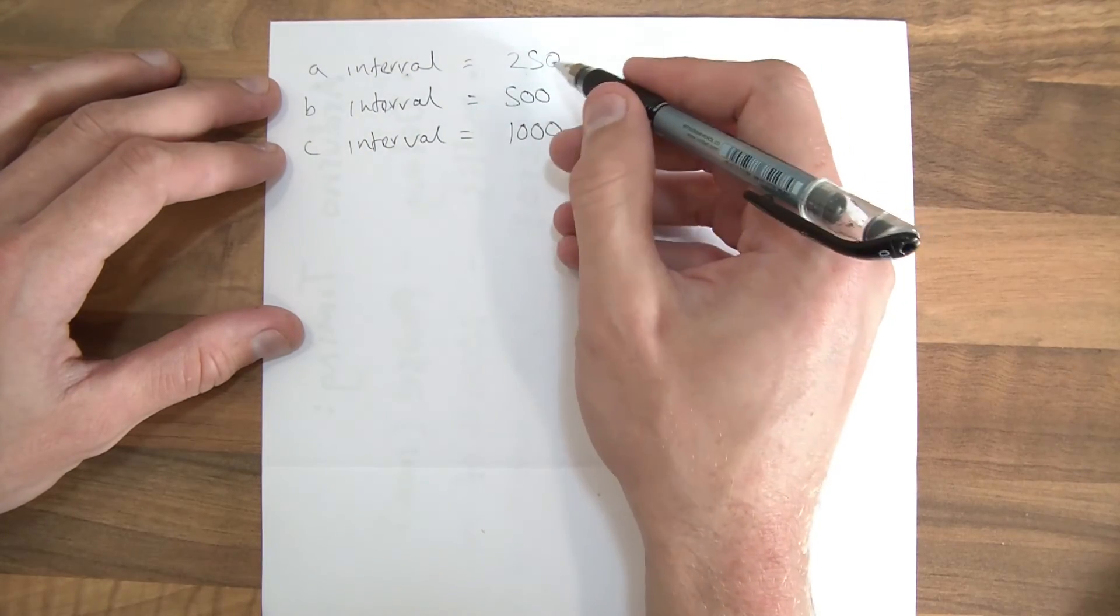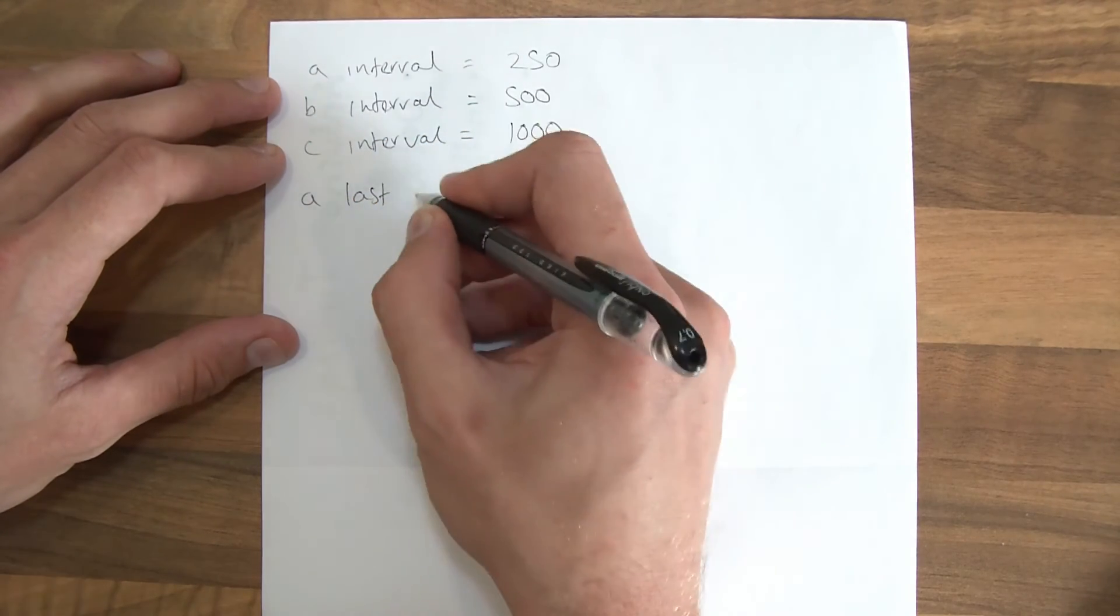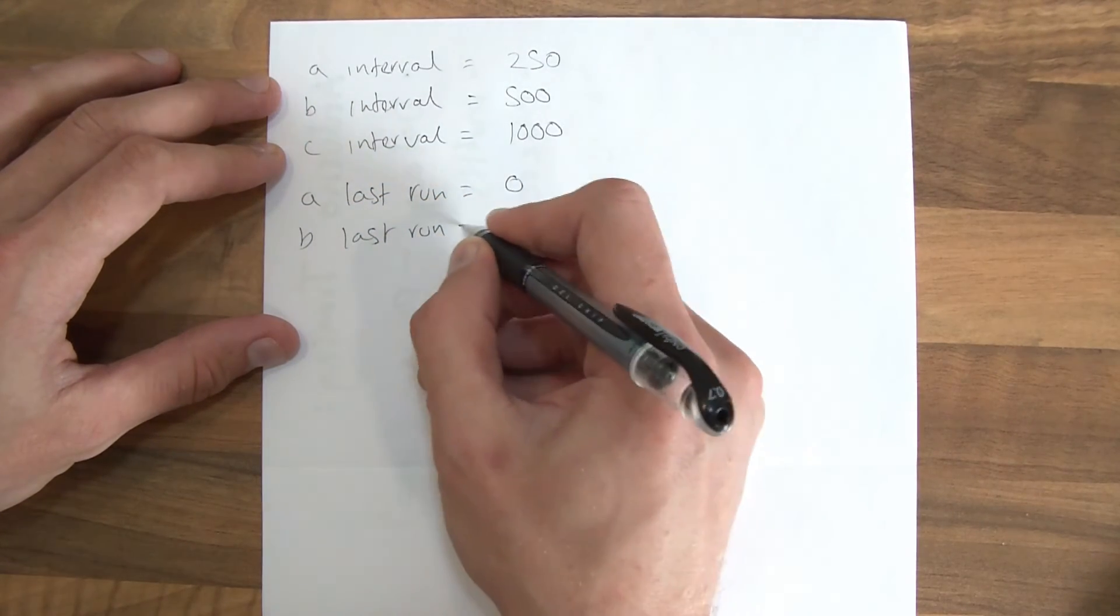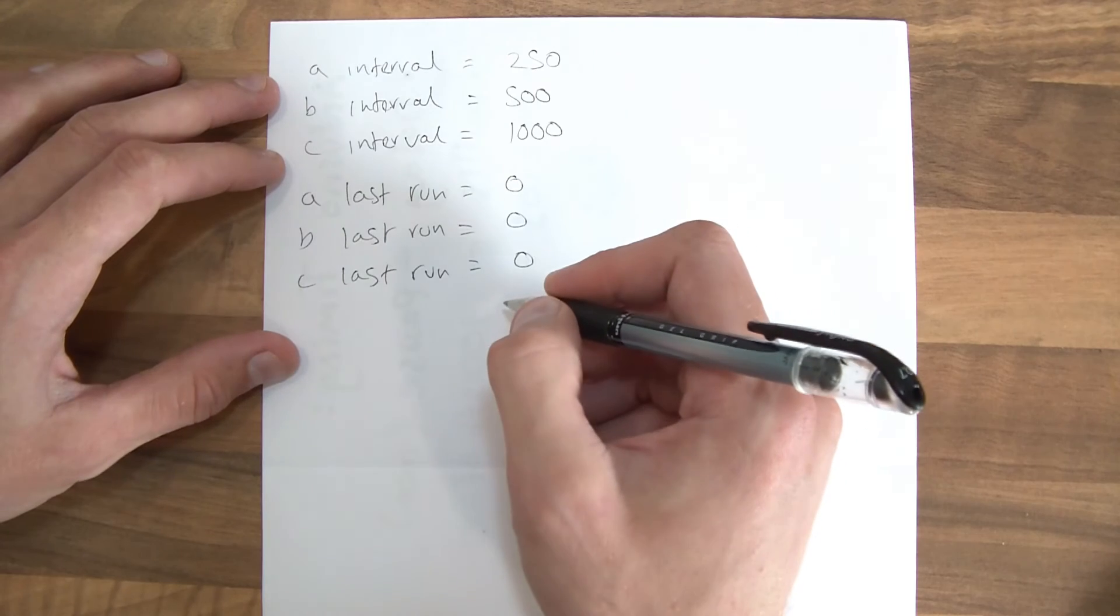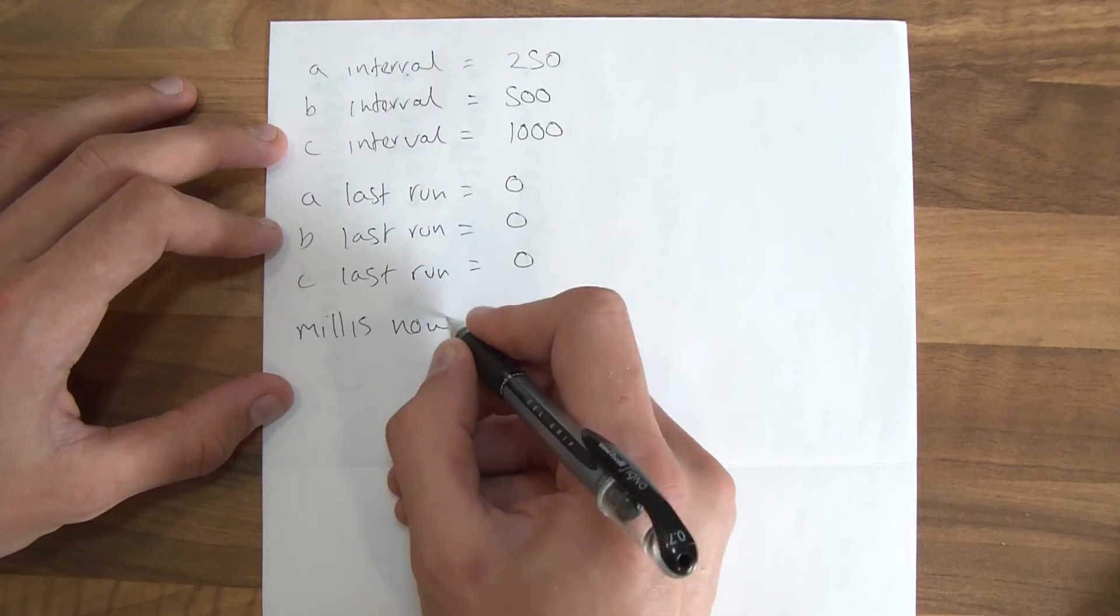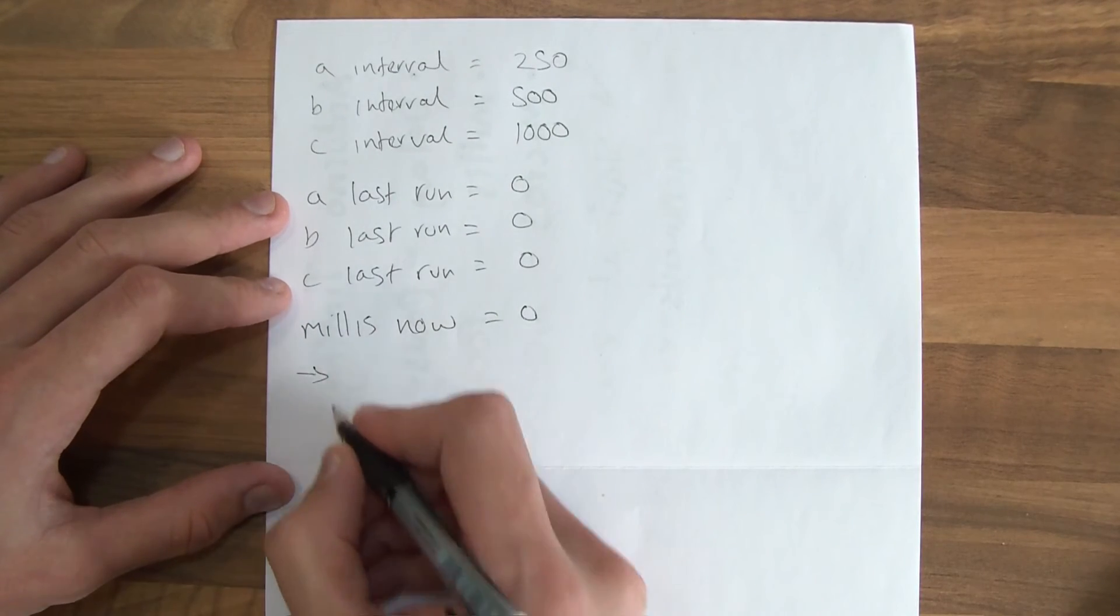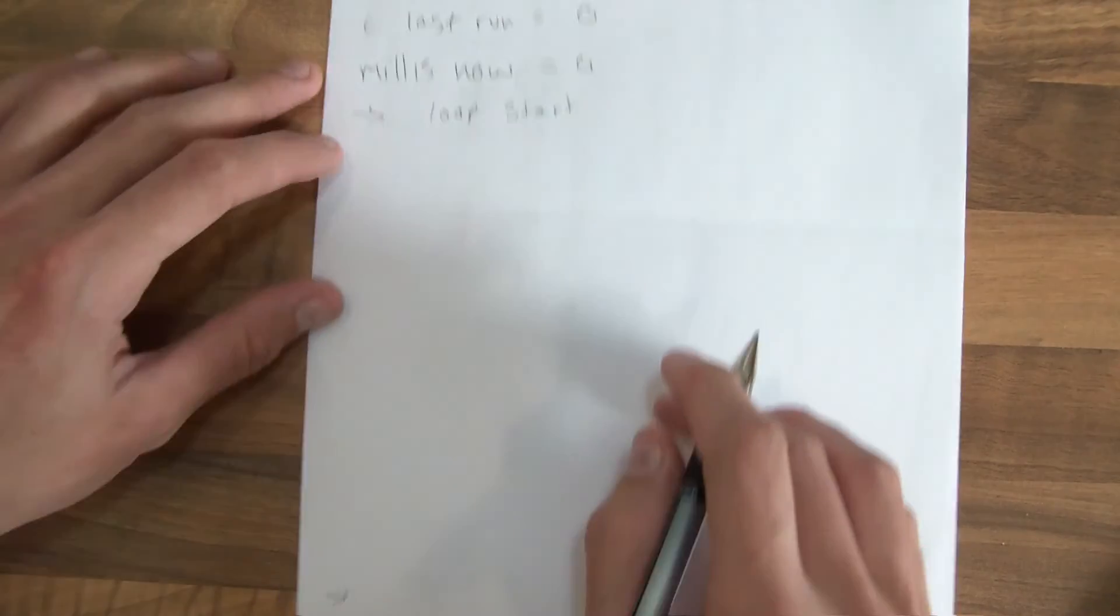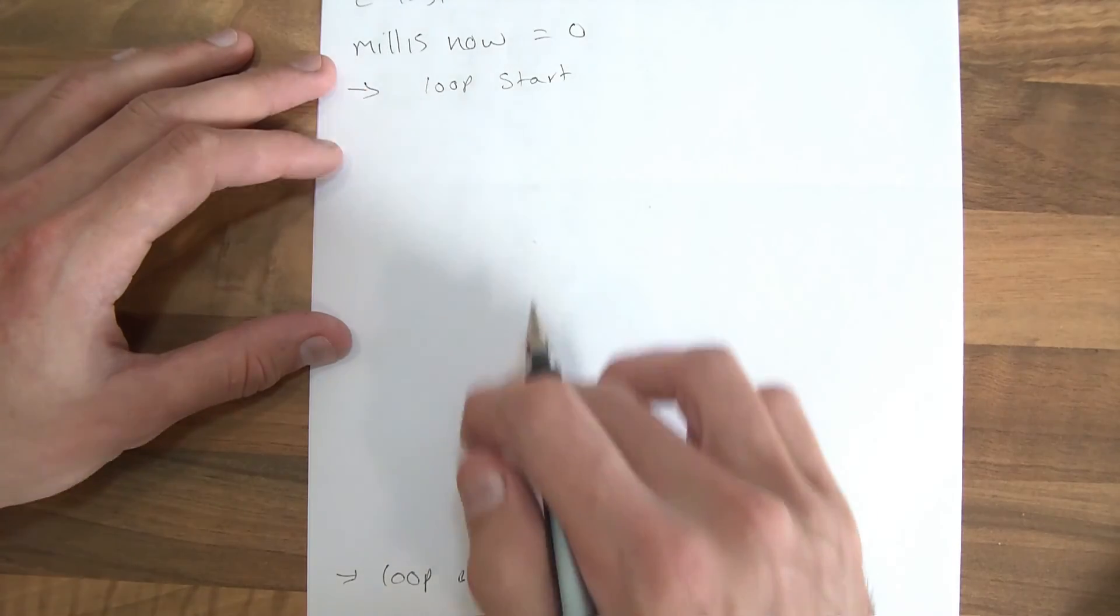OK, so these are just variables with integers. And then we need to know the time A was last run, which I'm going to set to zero. B last run, that's going to be zero. And C last run, so when were they last run? They were all last run at zero milliseconds, which is the default value. Then we need to set another variable, millis now. And that can be zero as well. Then we've got the loop start. So loop start, and down here we'll have loop end. So this is going to be inside the Arduino loop.